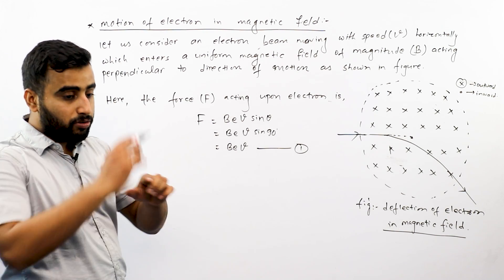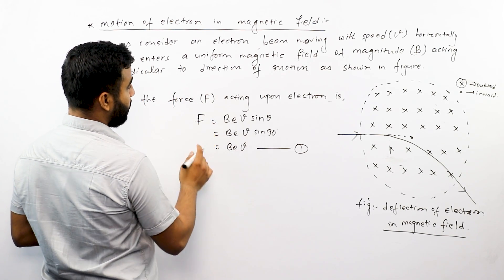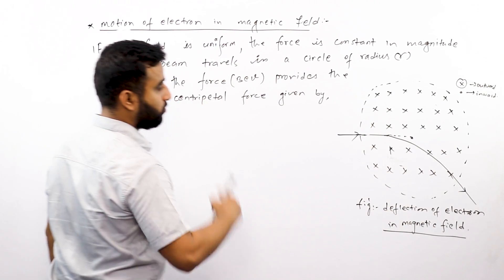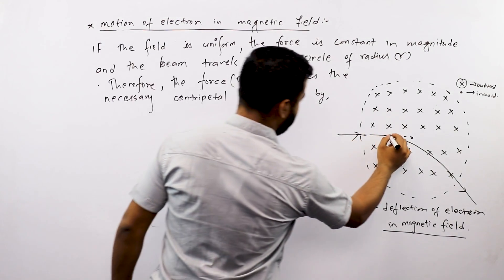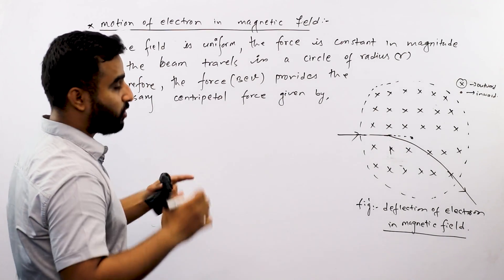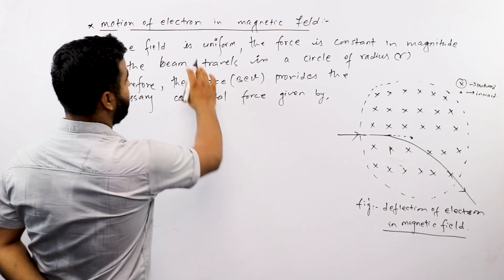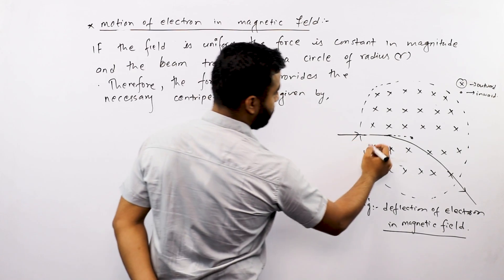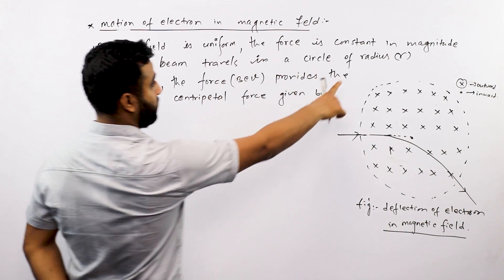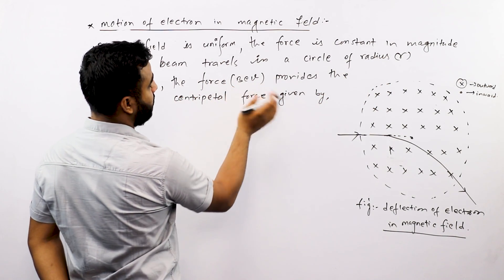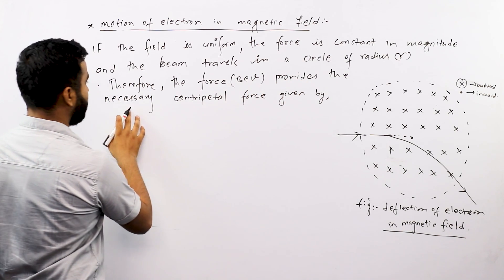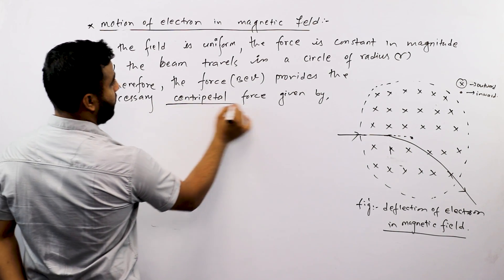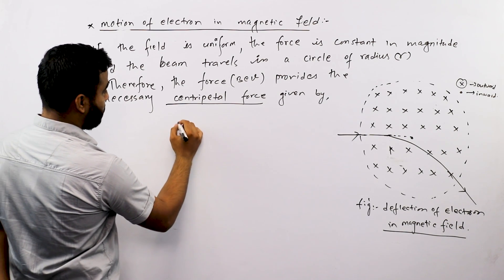This is a circular force, which acts as a centripetal force, and is equal to the Lorentz force. This magnetic field deflects the electron into a circular path. If the field is uniform and the force is constant in magnitude, the beam travels in a circle of radius r inside the magnetic field. Therefore, the Lorentz force Bev provides the necessary centripetal force.